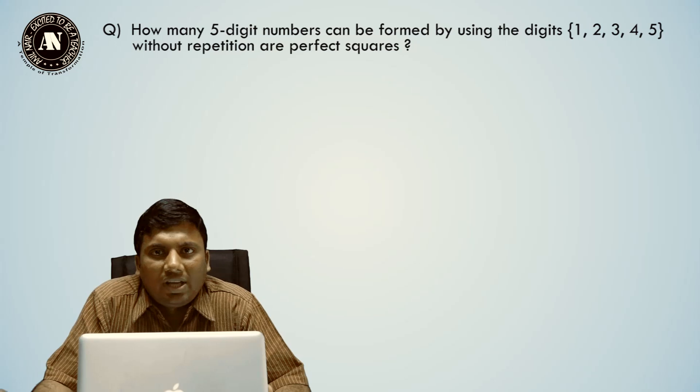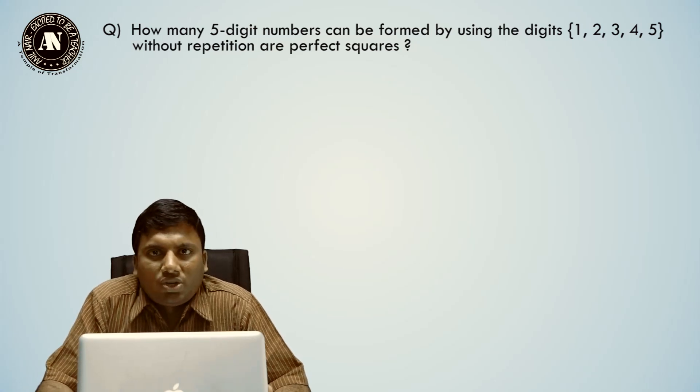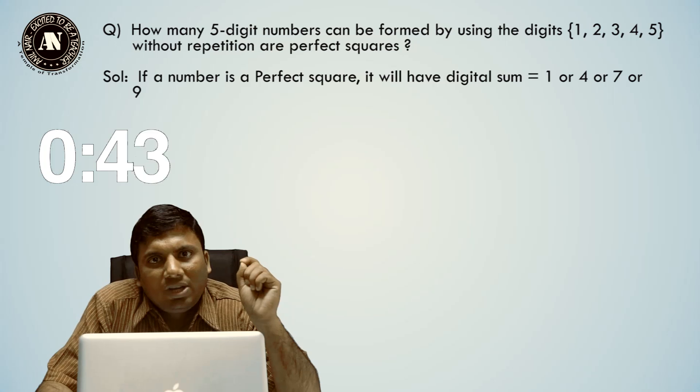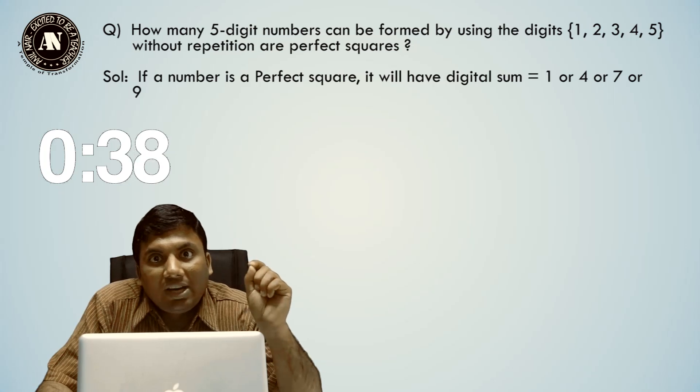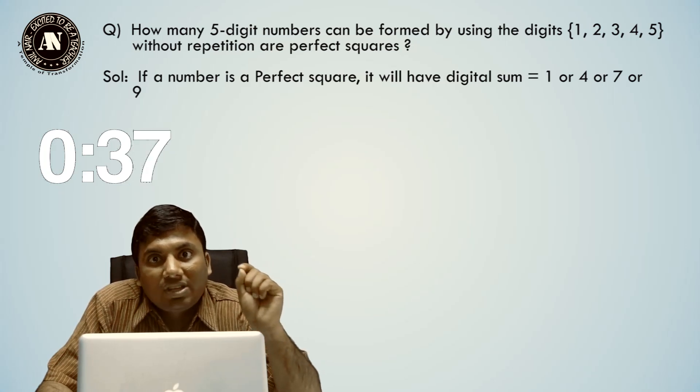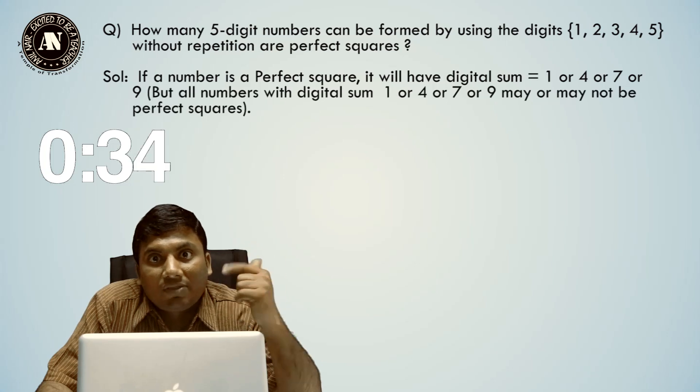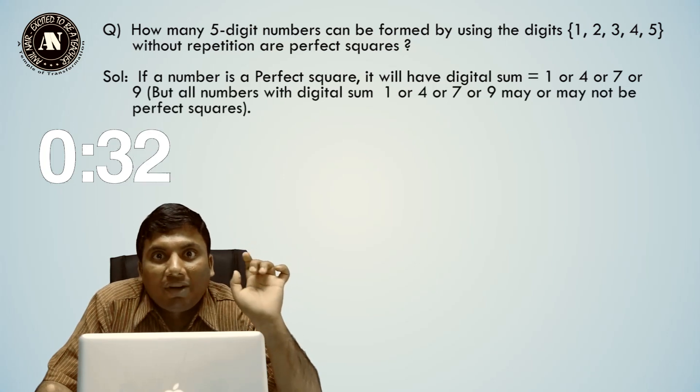Listen to my approach. Every perfect square will have digital sum 1, 4, 7, or 9. If the number is a perfect square it will definitely have digital sum 1, 4, 7, or 9. However, all numbers with digital sum 1, 4, 7, or 9 may or may not be perfect squares.